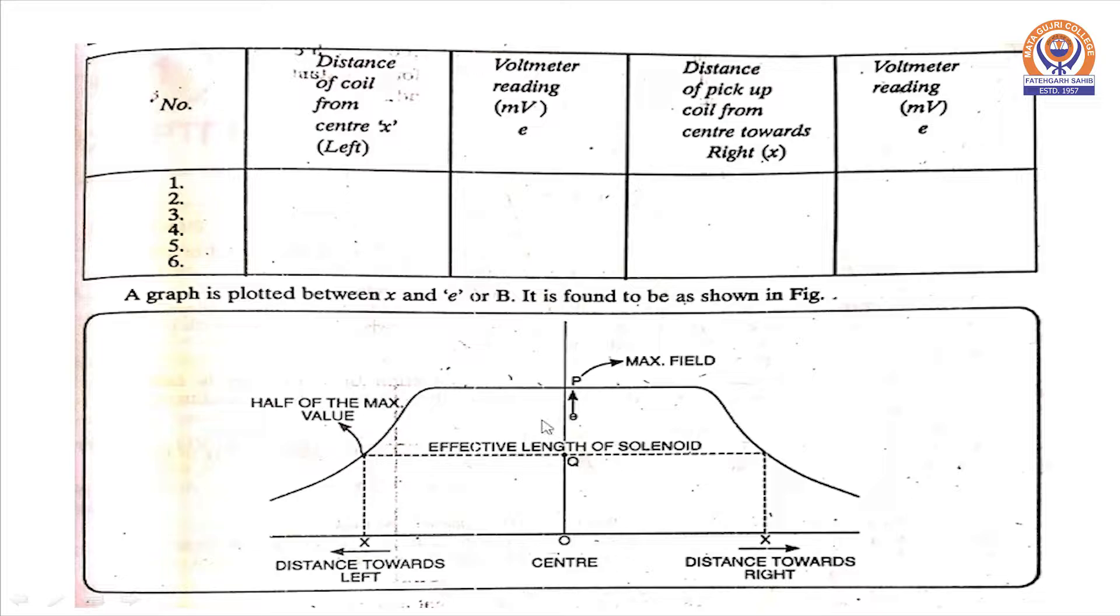And this table will give us a graph like this. At the center the magnetic field is maximum, it will be constant up to some length then after covering some distance, it will keep on decreasing slowly. Up to this point x, effective length of solenoid is counted. After that, value of magnetic field reduces to almost half at the endpoints.